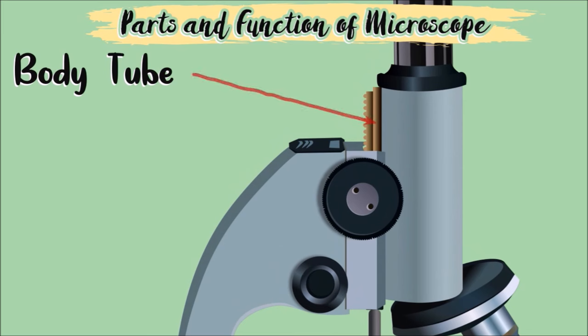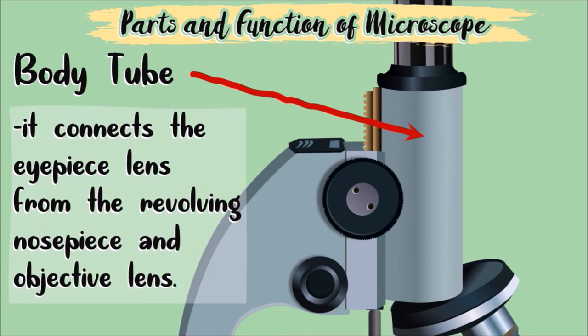This part of the microscope is the body tube. It connects the eyepiece lens from the revolving nose piece and objective lens.